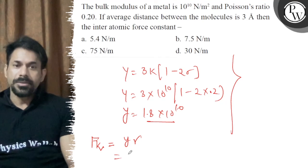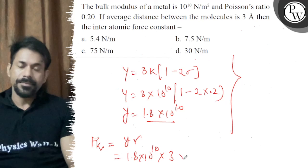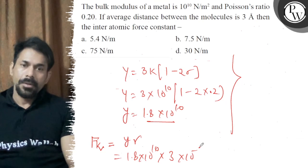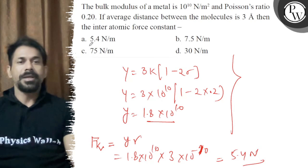Y is 1.8 into 10 power 10 and r is 3 Angstrom, which is 3 times 10 power minus 10. So this gives us 5.4 Newton. The right answer is option A. All the best.